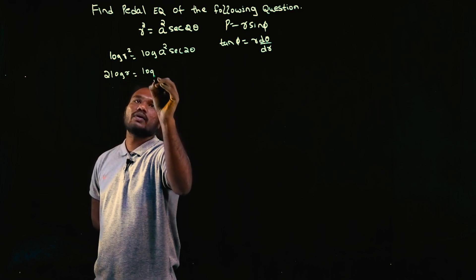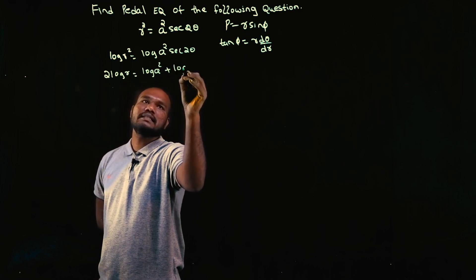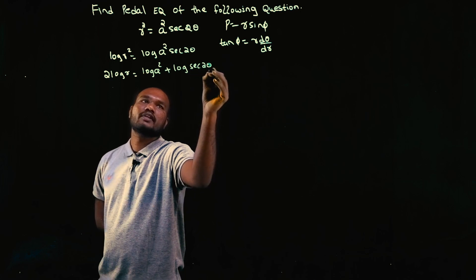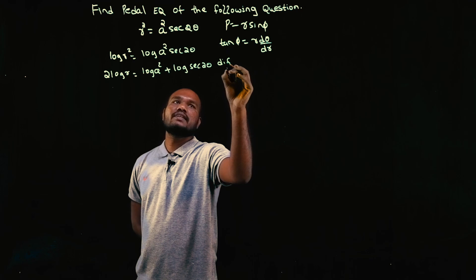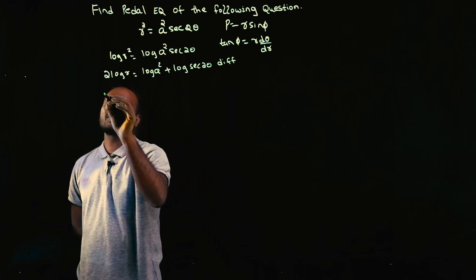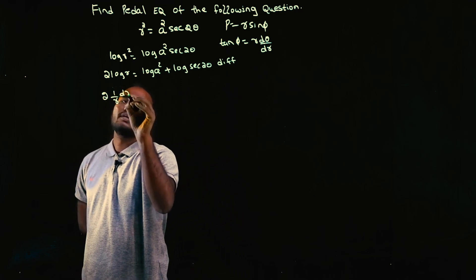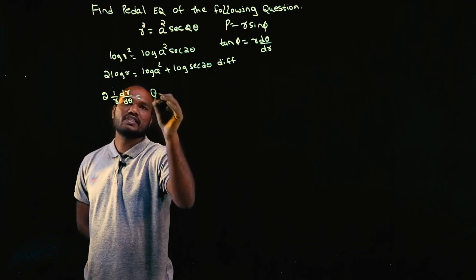Now let's differentiate. 2 log r differentiation is 2 × 1/r × dr/dθ. This equals log a² differentiation which is 0, plus log sec²θ differentiation, which is 1/sec²θ × sec²θ tan 2θ × 2.